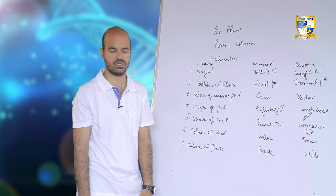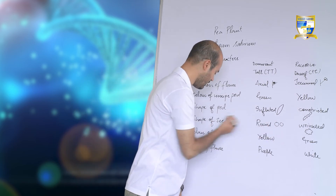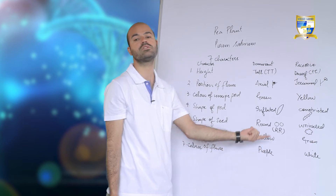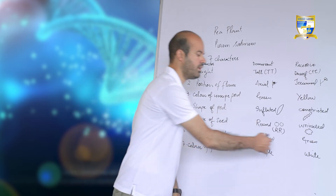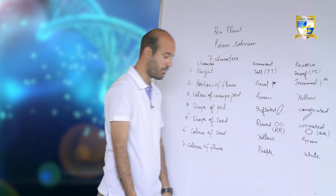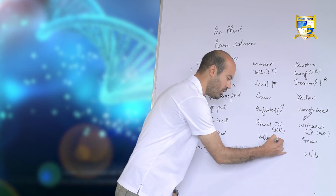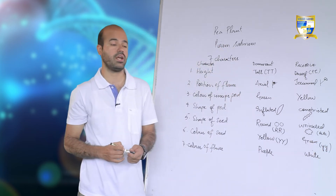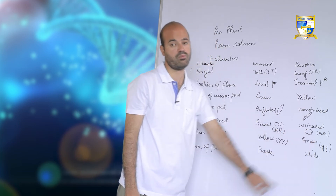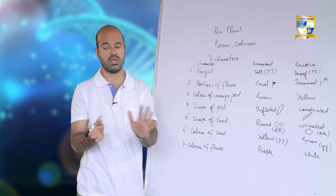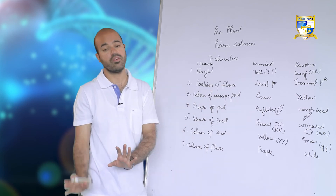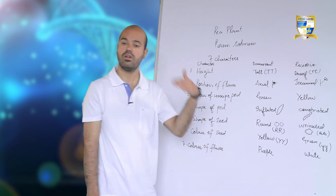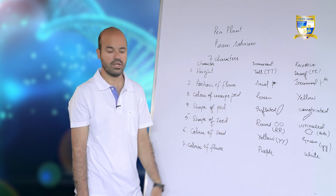Pure plant means both forms of genes are the same — homozygous condition. For example, a tall plant has genotype TT and a dwarf plant has genotype tt. For shape of seed: round is represented as RR homozygous and wrinkled as rr. For color of seed: yellow dominant is YY and recessive green is yy. In genetics, dominant genotypes are represented by capital letters and recessive by lowercase letters.